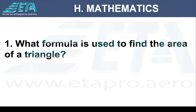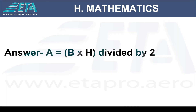What formula is used to find the area of a triangle? To find the area of a triangle, multiply the base by the height and then divide by 2.